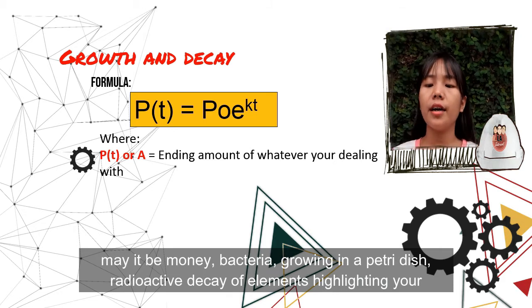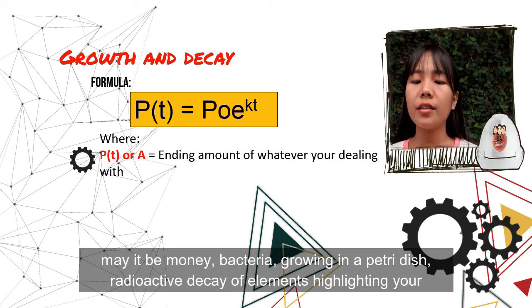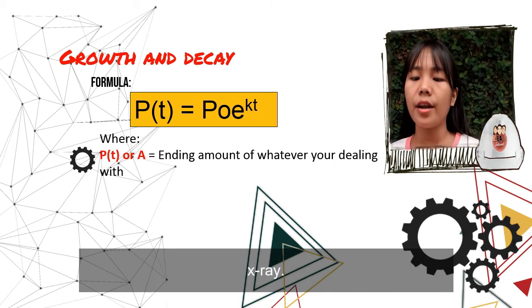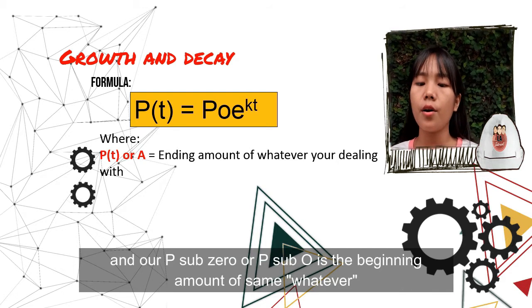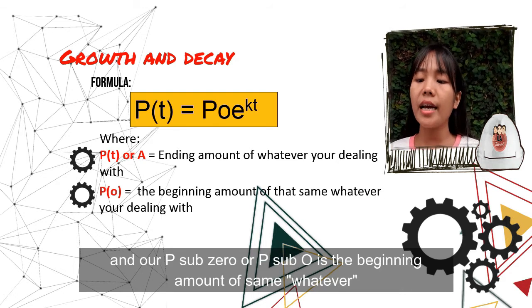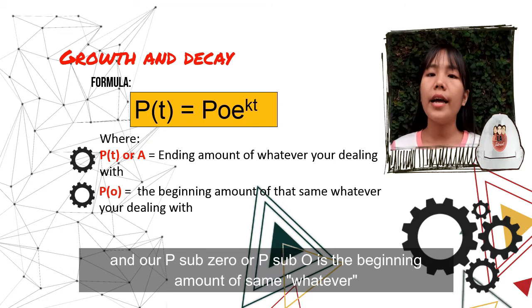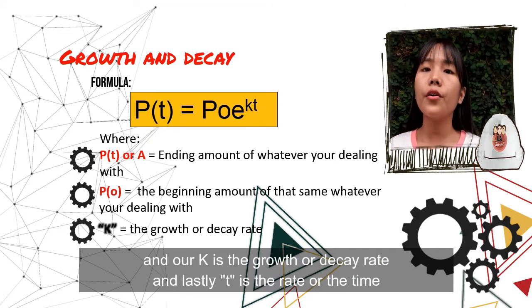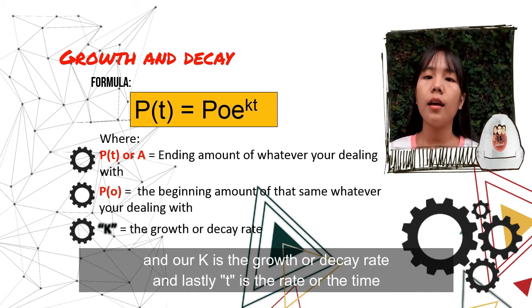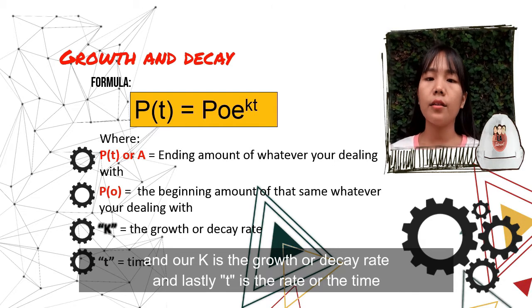May it be money, bacteria growing in a petri dish, radioactive decay of elements highlighting your x-ray. P₀ or P sub zero is the beginning amount of that same whatever, k is the growth or decay rate, and lastly t is the time.